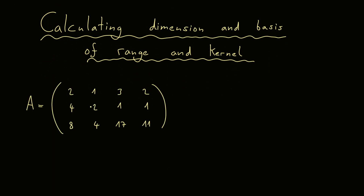So let's look at this 3x4 matrix. Because we have to calculate the range and the kernel, we want to do this simultaneously. Therefore we do what we do every time when we want to solve a system of linear equations — namely, we reduce this matrix to a row echelon form. And of course this is what I show you now.